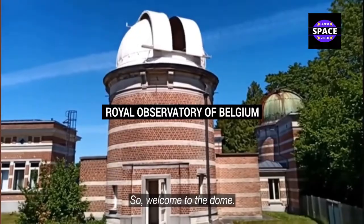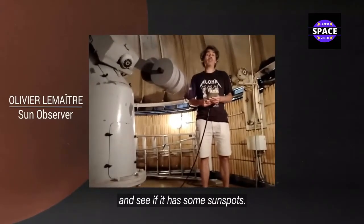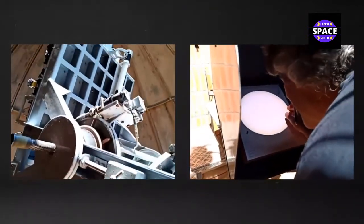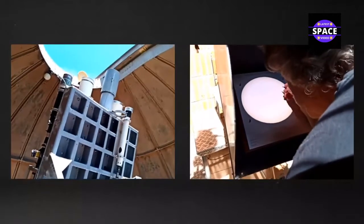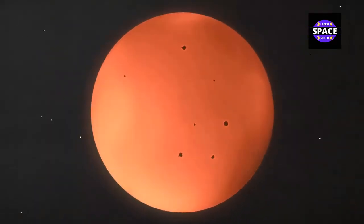So welcome to the dome. Today we're going to observe the Sun and see if it has some sunspots. Every morning when the skies are clear, Olivier looks through this telescope in search of sunspots. These are dark blotches on the Sun that are the main source of solar eruptions. They appear and disappear on the Sun's surface.